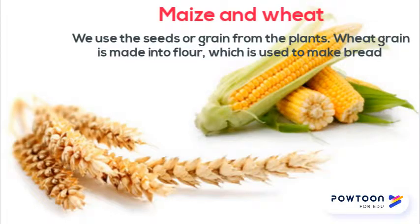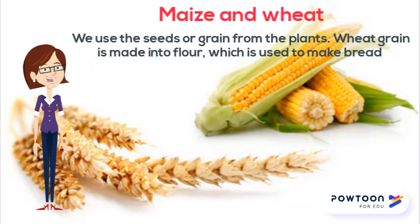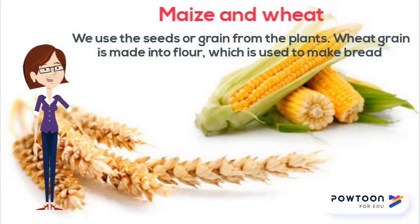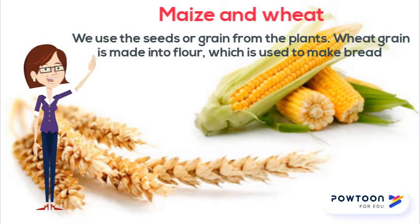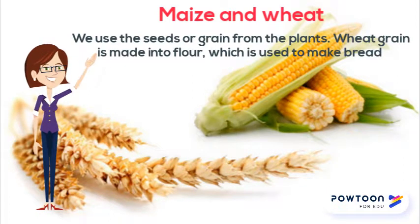Maize and wheat are called general crops. We use the seeds to grain from the plants. Wheat grain is made into flour which is used to make bread. Maize seeds are used to make mealie meal.